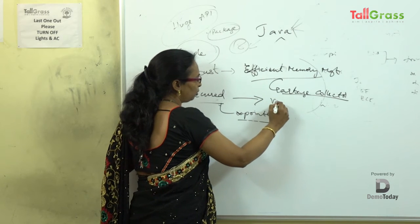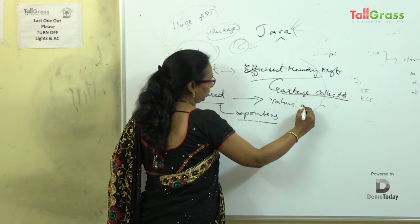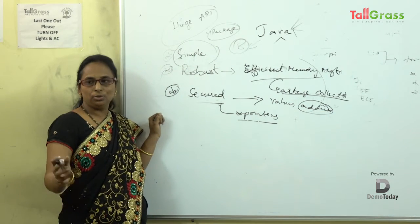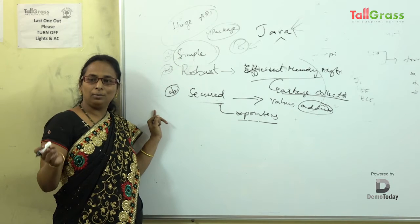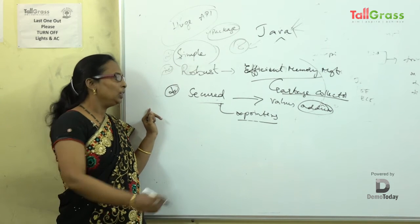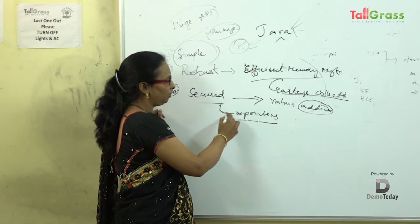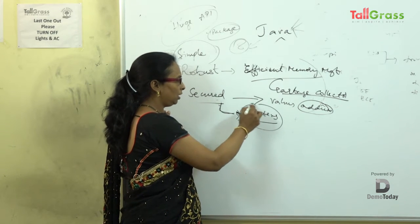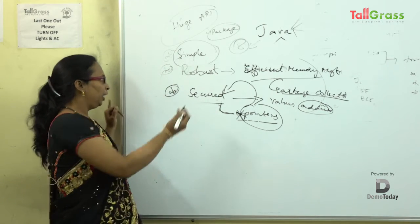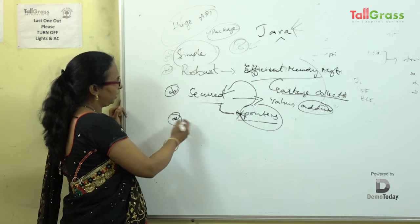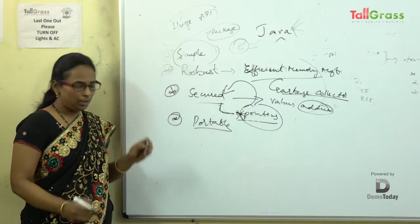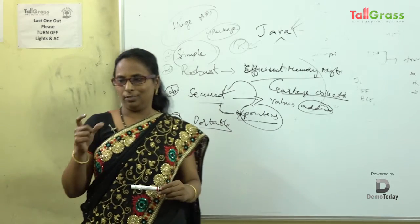We are focusing more on values rather than addresses. The Java team totally removed pointers, and since pointers are not there, Java is secure. Moving on, Java is also portable. Portable means you can write a program in Java with very few lines of code.